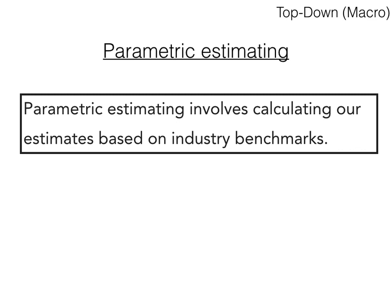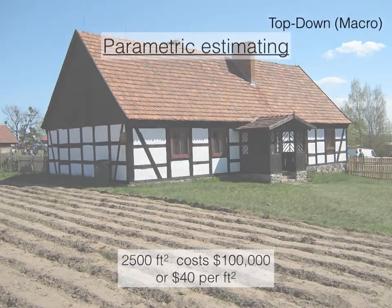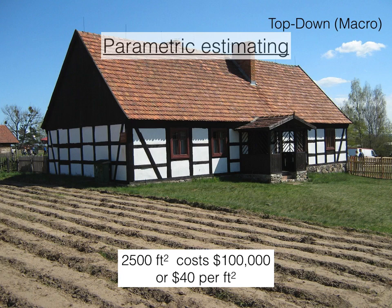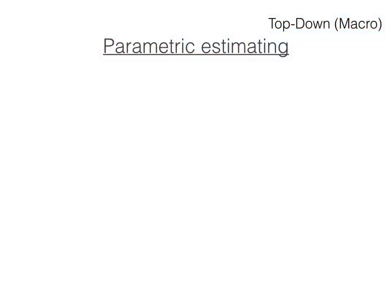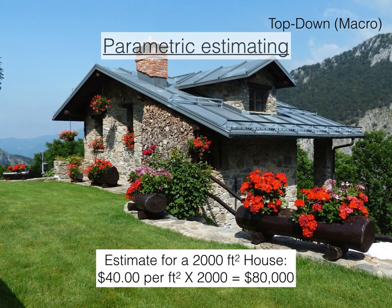Parametric estimating involves calculating our estimates based on industry benchmarks. A good example is from the construction industry. Say we produce a house for a customer — it's 2,500 square feet and costs $100,000 to construct, so on average it's $40 per square foot. If another customer asks us to produce a house that's 2,000 square feet, and the conditions and materials are equivalent, we can use that $40 per square foot to estimate the house will cost $80,000 to produce.